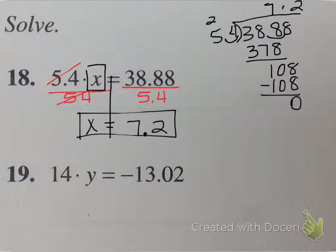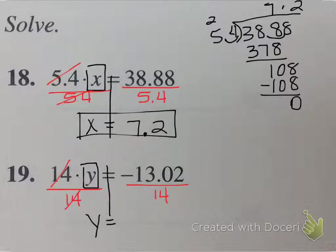Similar on this bottom one, again we want to get the y all by itself and I need to get rid of this multiplication of 14 by using division because then those both cancel, but remember what you do to one side you have to do to the other, so now I just have to do the math. Now a negative divided by a positive, I know my answer is negative. I'm going to go ahead and pencil that in, come over off to the side to do my division.